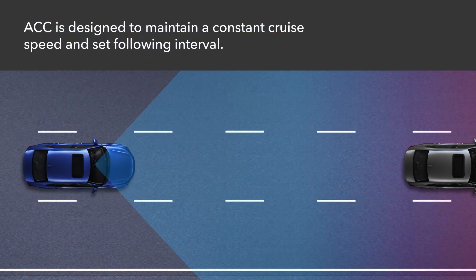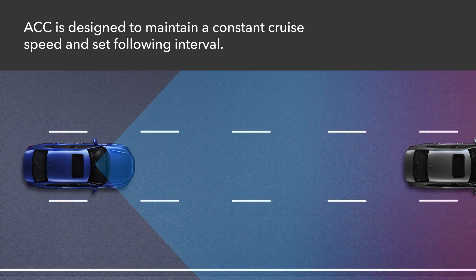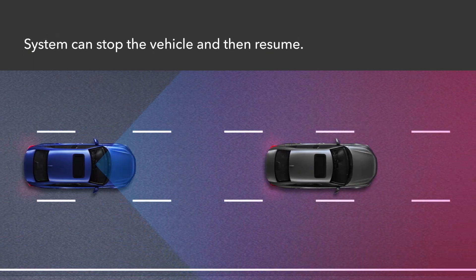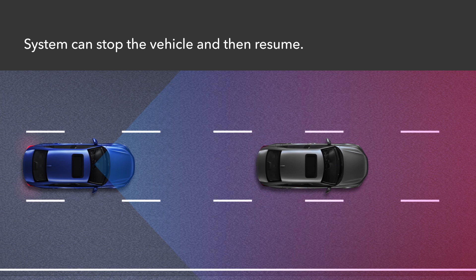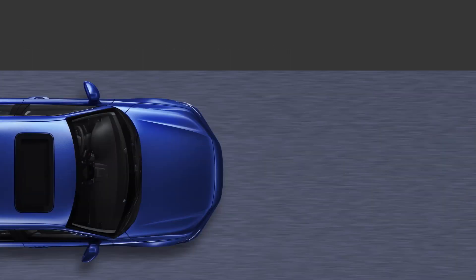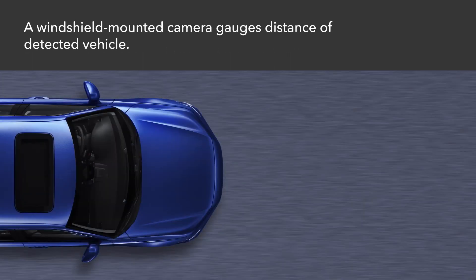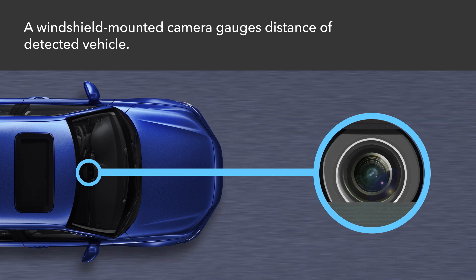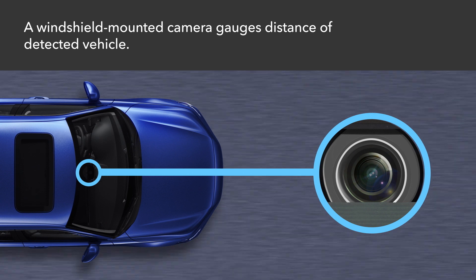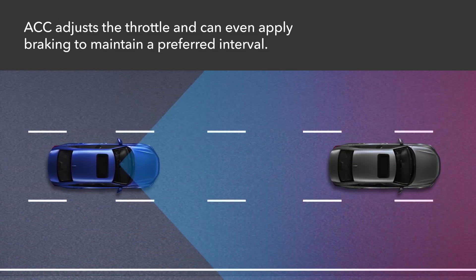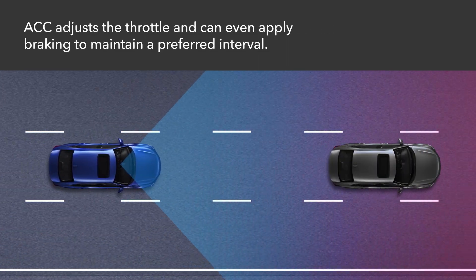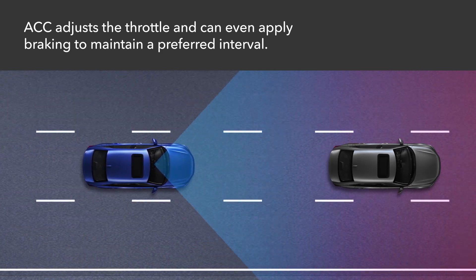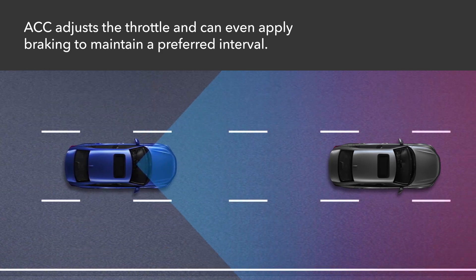ACC maintains a set following interval behind detected vehicles. It can even bring the vehicle to a stop and resume following again. ACC uses a windshield-mounted camera to gauge the distance of a detected vehicle ahead, then sets the appropriate throttle position and can even apply braking to maintain a preferred following interval.